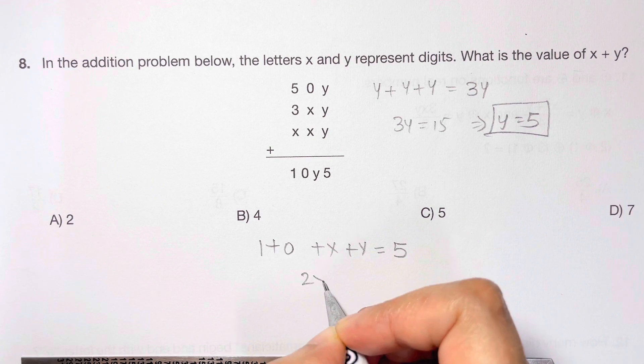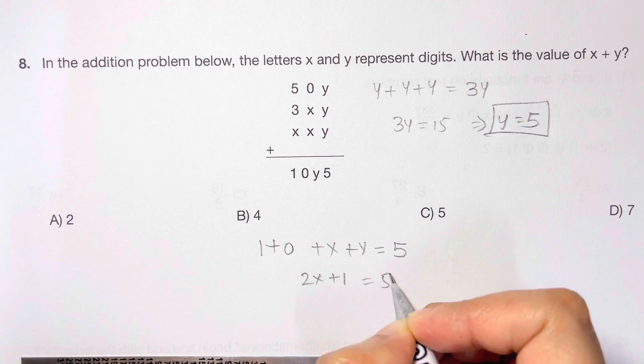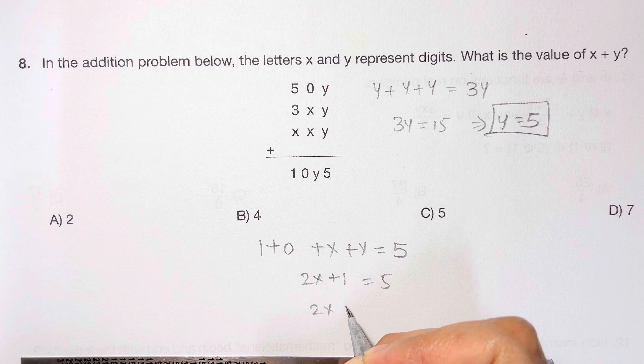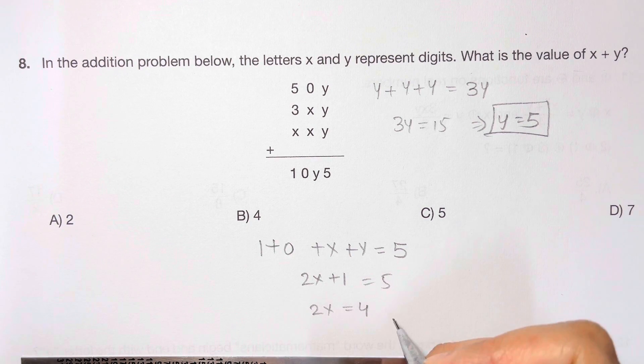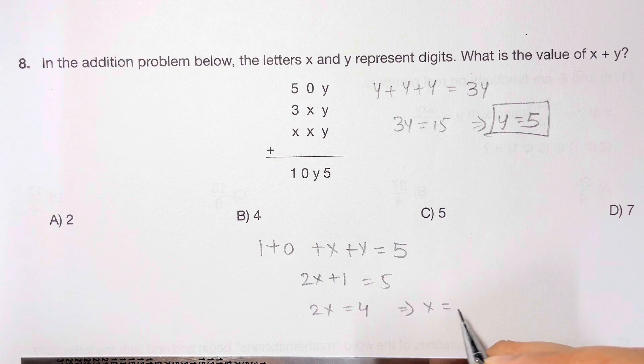So let's solve for that. That is 2x plus 1 is equal to 5. So 2x is equal to 5 minus 1, that's equal to 4. x is equal to 2.